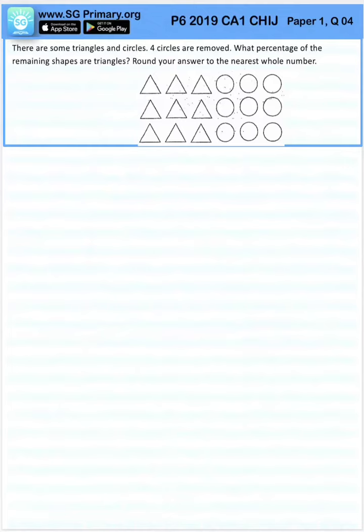Question 4. There are some triangles and circles. Four circles are removed. What percentage of the remaining shapes are triangles? Round your answer to the nearest whole number.